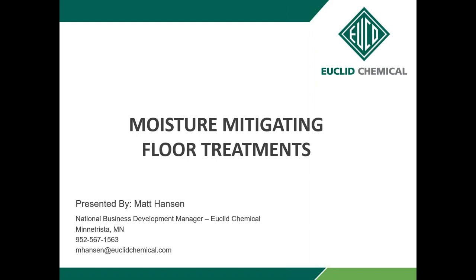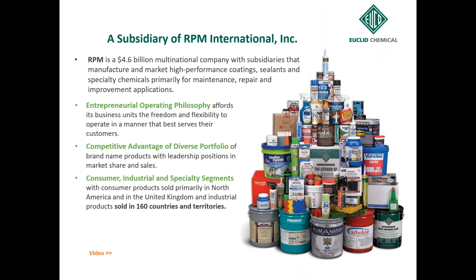As Vicky mentioned, I've been with Euclid for about 23 to 24 years. We are an RPM-held company — RPM is a very large holding company, a U.S. company traded on the Dow. They own other brands you may be familiar with such as Tremco, Drive-It, Stonhard, Carboline, Zinsser primers, Testors model glues, and a whole plethora of different chemicals used in construction and the adhesive industry.